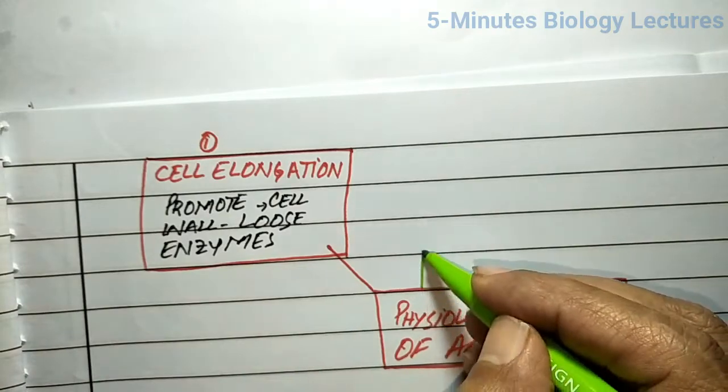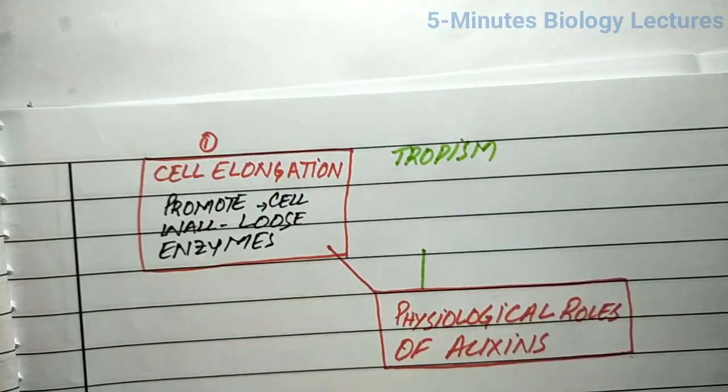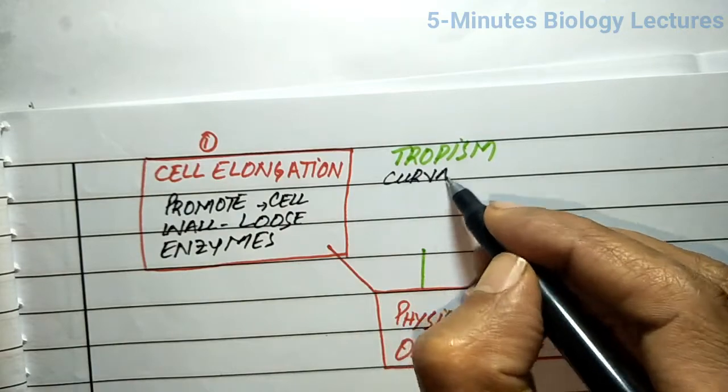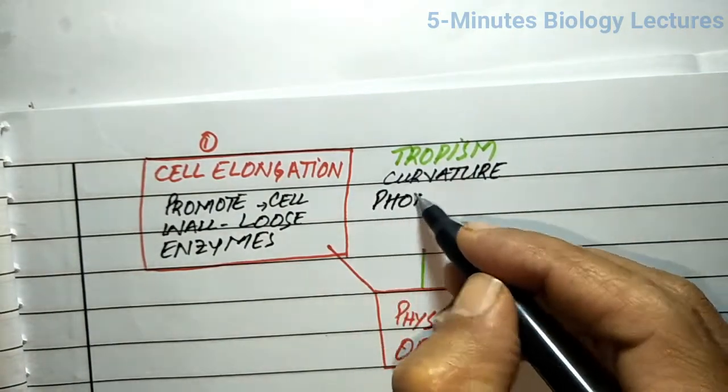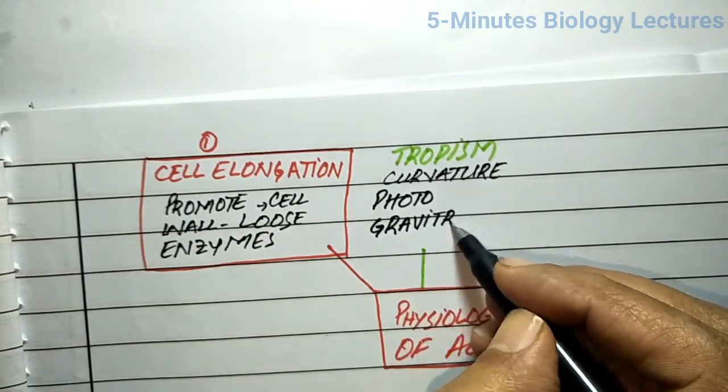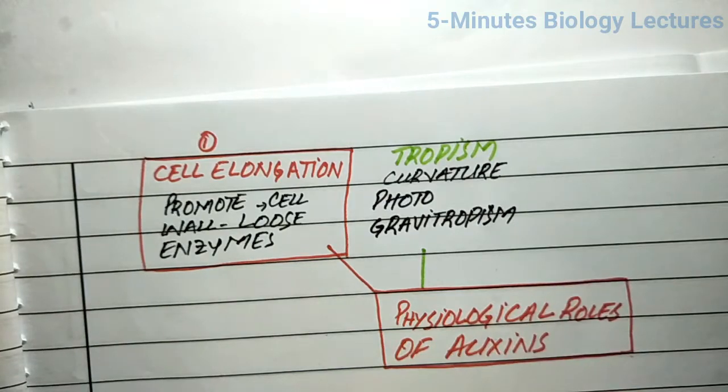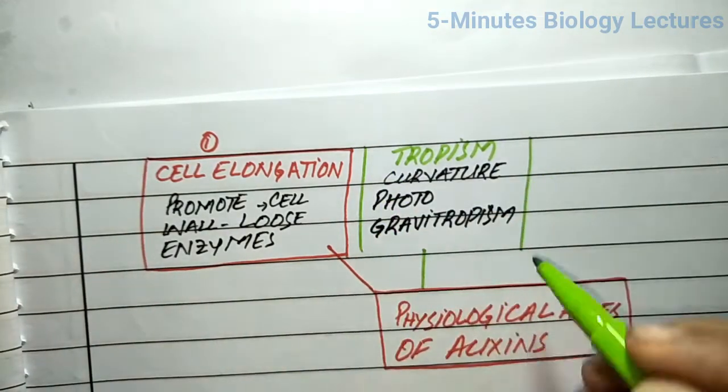Causing curvature of plant organs in response to stimuli is an important role of auxins. They are responsible for positive phototropism by the shoot and positive geotropism by the root.